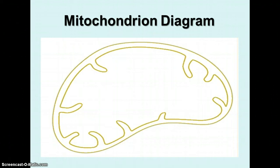In class, we're going to make a foldable. The outside of the foldable has a mitochondrion diagram. If you're taking notes having missed class, you need to get a copy of this worksheet from your teacher.